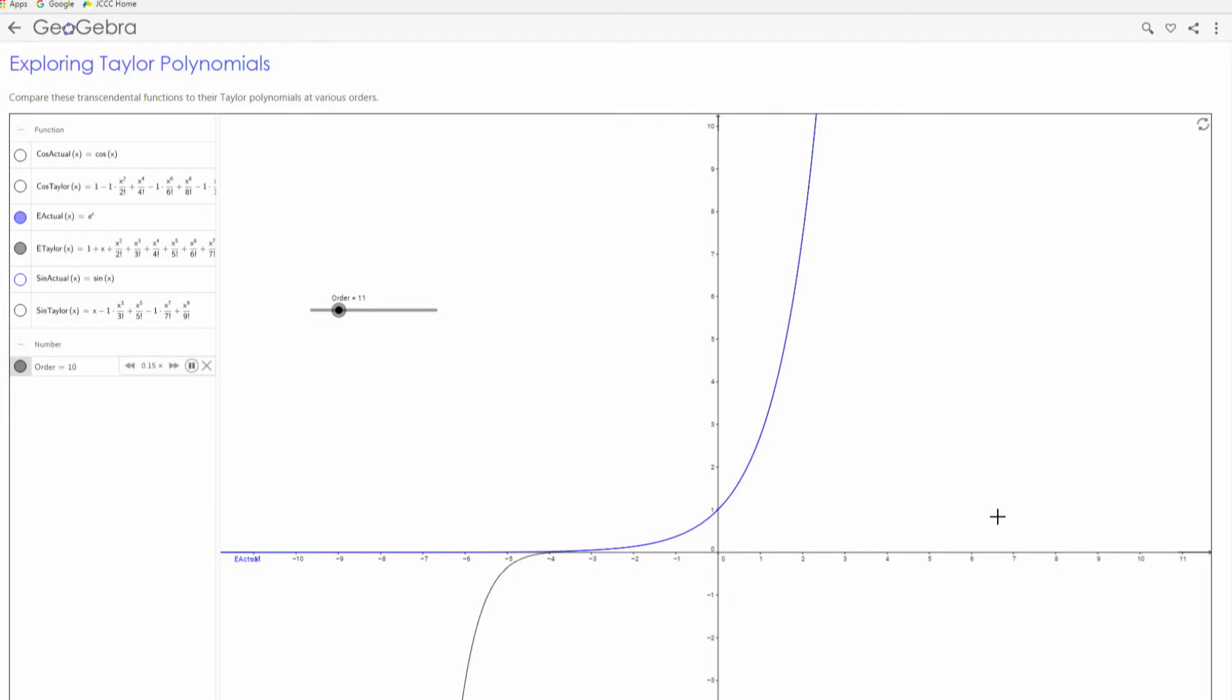I guess the Taylor polynomial is converging on e to the x. E to the x is just sitting there. And then on the left-hand side, it's doing a better and better job of matching.